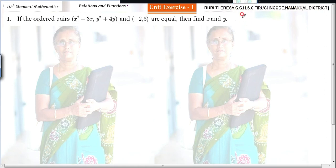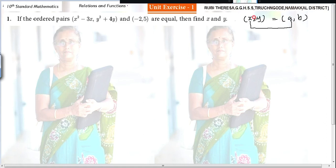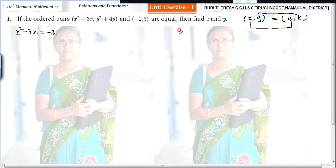Ordered pairs are represented as x comma y, where the first one is the x-coordinate and the second one is the y-coordinate. If both ordered pairs are equal — say a, b — then x is equated with a and y is equated with b. In the same way here, x squared minus 3x is equated with minus 2, and y squared plus 4y is equated with 5.